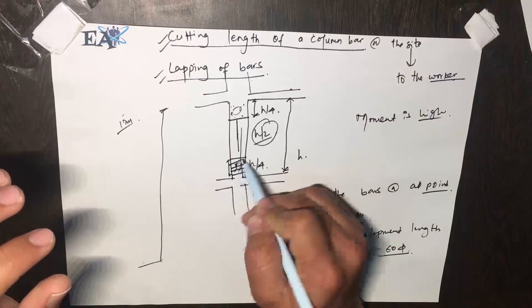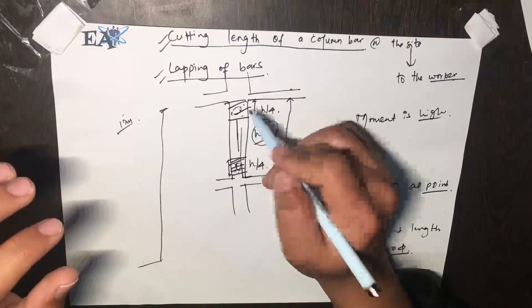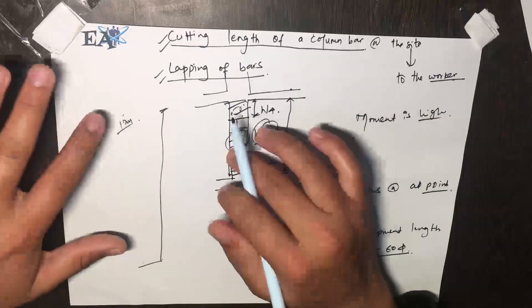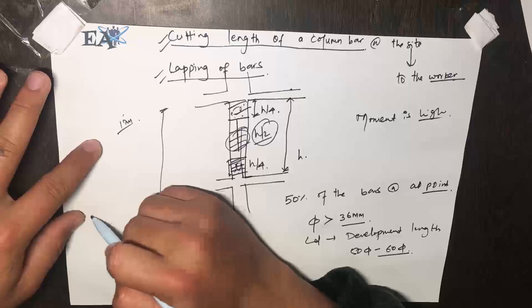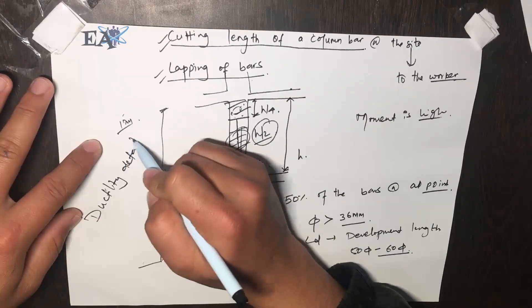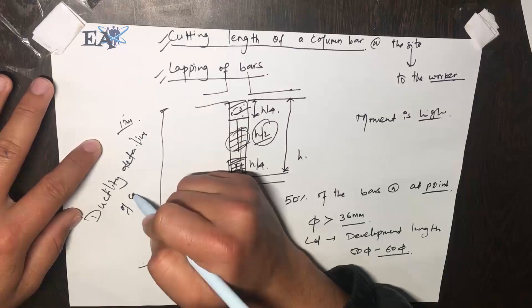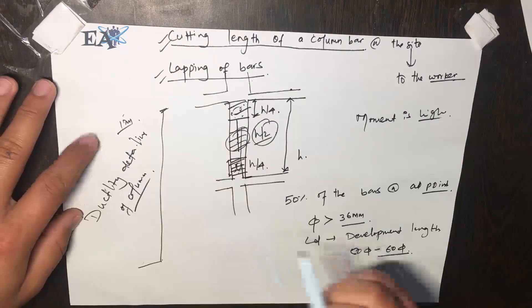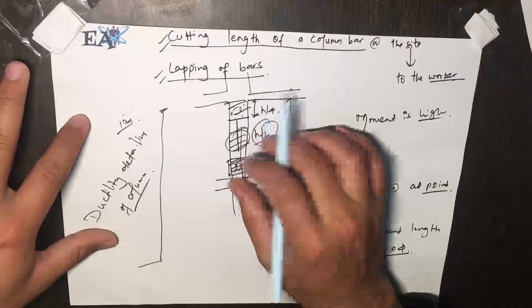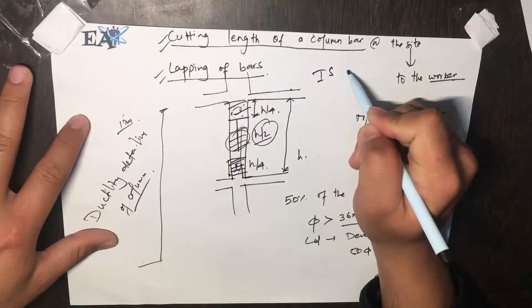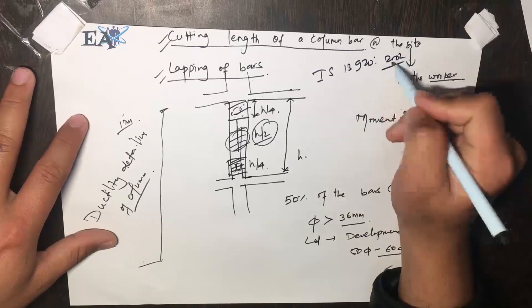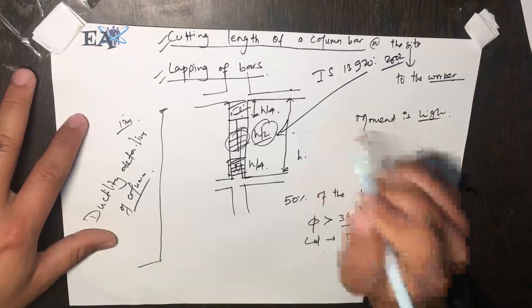If you want to know how your stirrups should be positioned in this location and at this lapping position, I have made another separate video with the topic ductility detailing of column. You must watch that video. In this video, I just wanted to give you the lapping position. This basically comes from IS 13920:2002, so you have to see this code for detailed information.